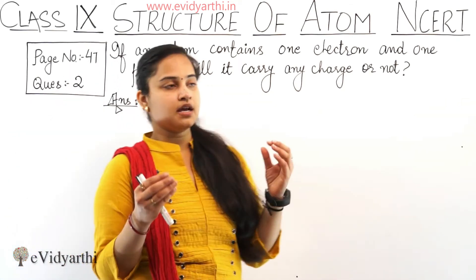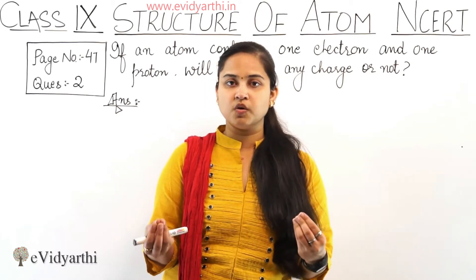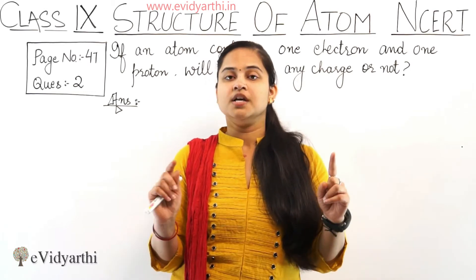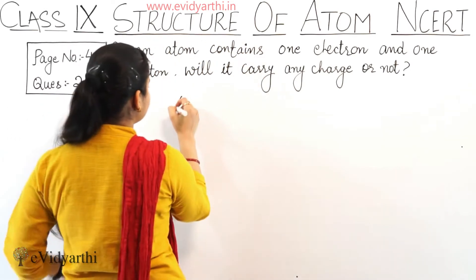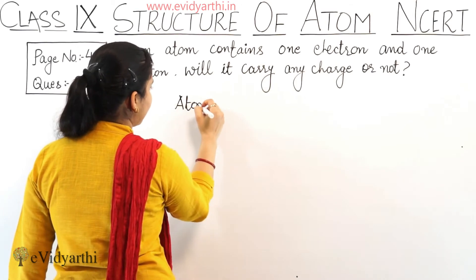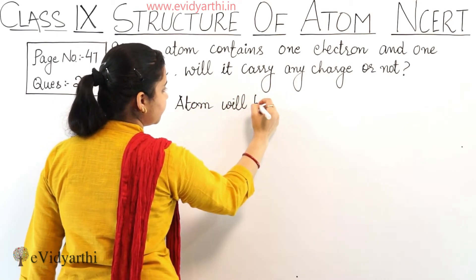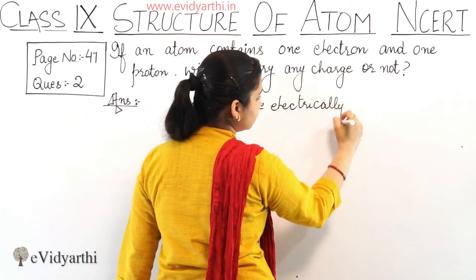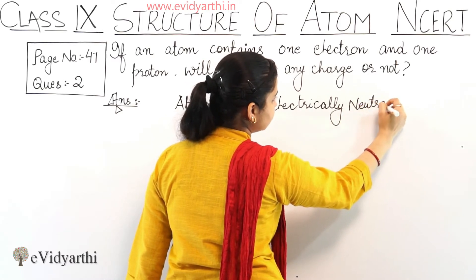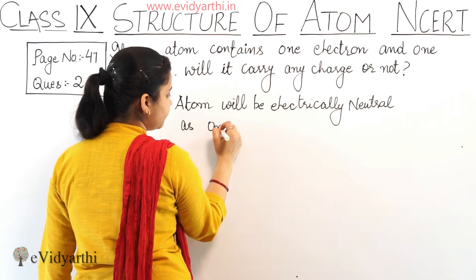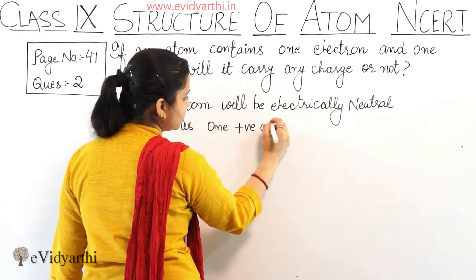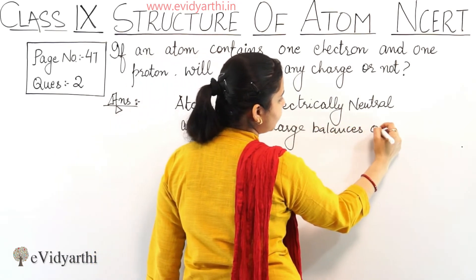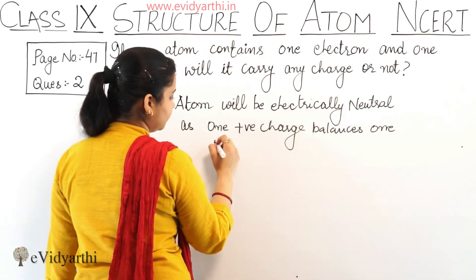So, mein kohongi ki, jay atom hooga, wou electrically neutral hooga because ek positive charge aur ek negative charge balance karta hai toh ek dúsare ko. Atom will be electrically neutral, as one positive charge balances one negative charge.